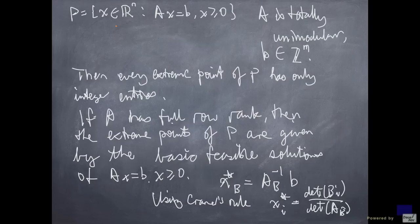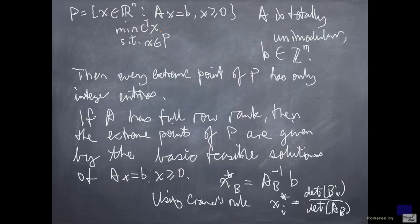And that means if we minimize some linear function over this polyhedron, if we look for extreme point optimal solutions — which will exist as long as there is an optimal solution, because a polyhedron in standard form always has an extreme point as long as it is not empty — we will have an integer solution. In other words, if we add in the requirement that x has to be an integer point in P, we don't really need this anymore. As long as we look for optimal extreme points, we'll get this condition for free.